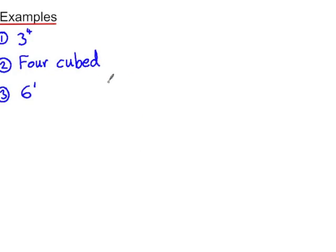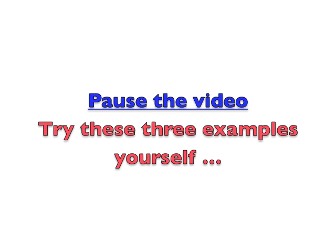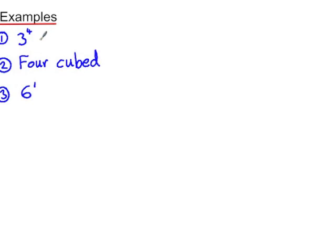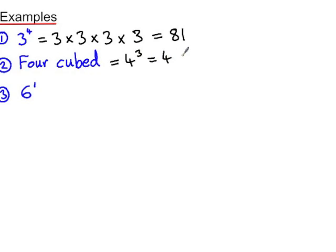For each of these three examples, write the expression in extended form — sometimes called expanded form — and work out the value. In extended form, three to the power of four is three times three times three times three: three times three is nine, times three is twenty-seven, times three is eighty-one. Four cubed means four to the power of three, so four times four times four — four times four is sixteen, multiplied by four is sixty-four. And six to the power of one is just six.